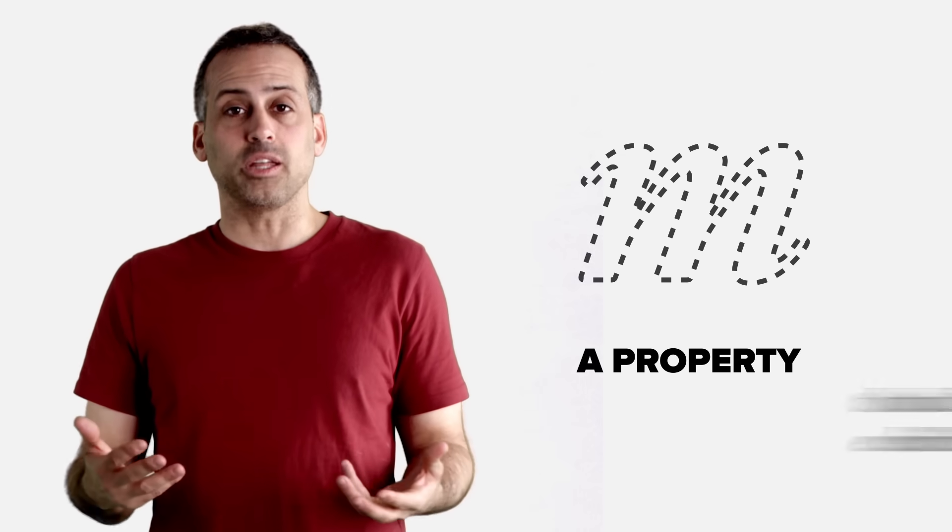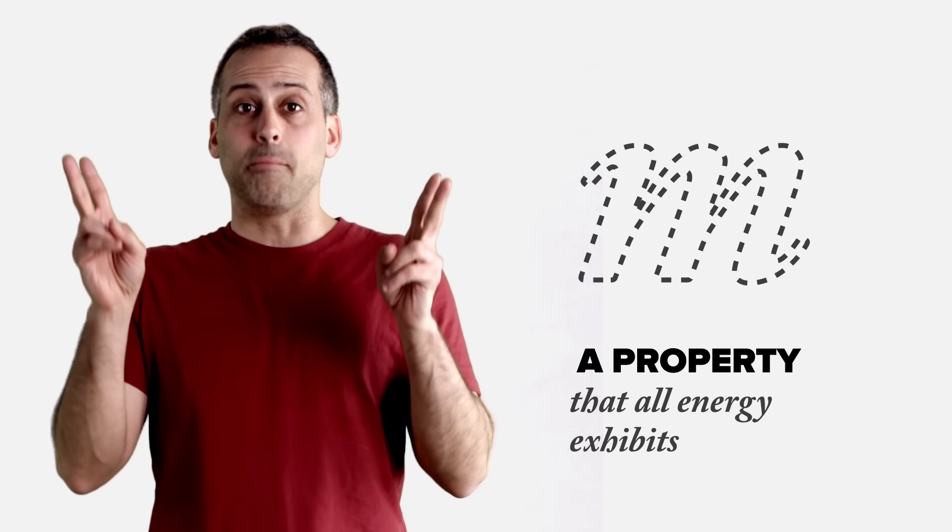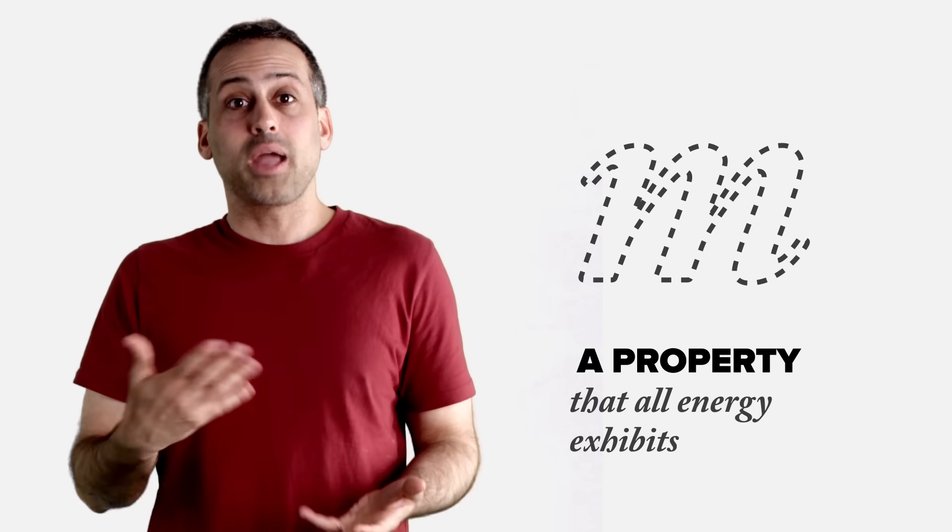Instead, the punchline of this episode has been that mass isn't really a thing at all. It's a property, a property that all energy exhibits. And in that sense, even though it's not correct to think of mass as an indicator of amount of stuff in the material sense, you can think of it as an indicator of amount of energy. So without realizing it, you've really been measuring the cumulative energy content of objects every time you've ever used a scale.